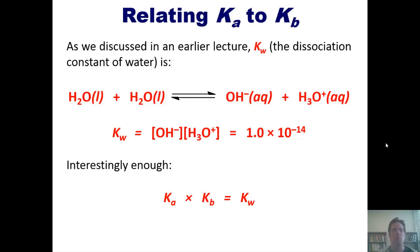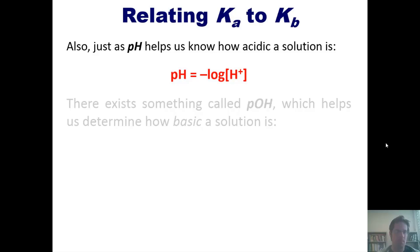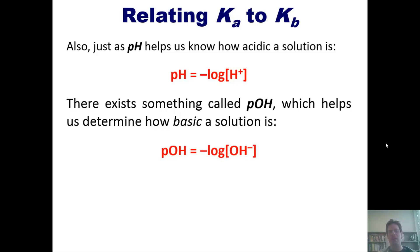Just as pH helps us know how acidic a solution is, there exists pOH which helps us determine how basic a solution is. pOH is given by negative log of the concentration of hydroxide. At 25 degrees Celsius, pOH plus pH equals pKW which is 14. It's a useful mathematical equation for solving problems.